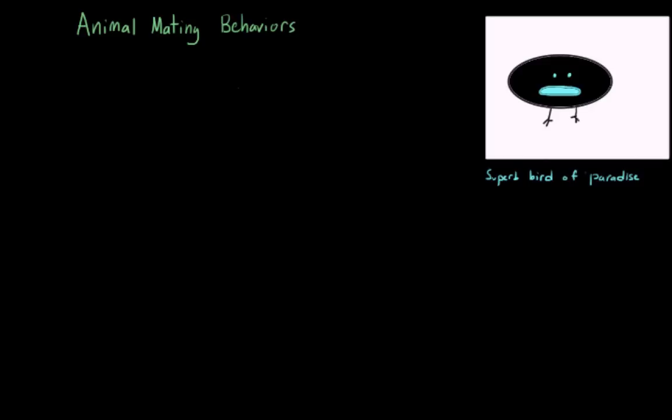When the male superb bird of paradise wants to attract a female, he does kind of a complicated dance that involves him bouncing around and then fluffing out his feathers in such a way that it kind of looks like a face.